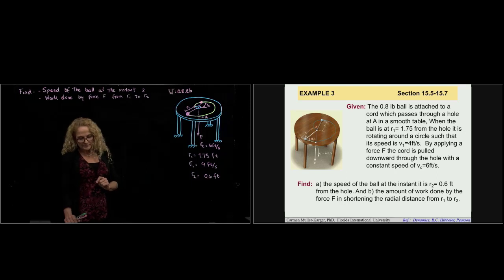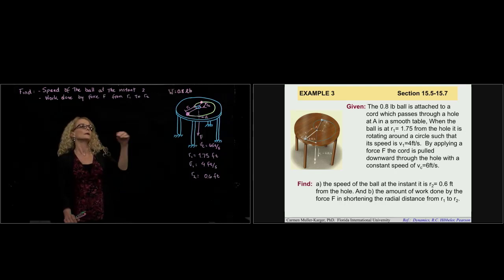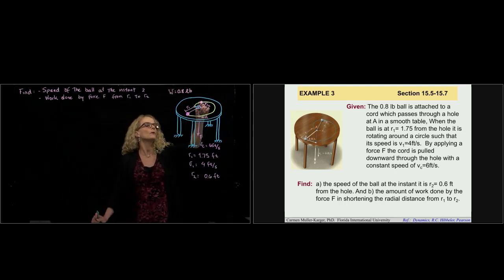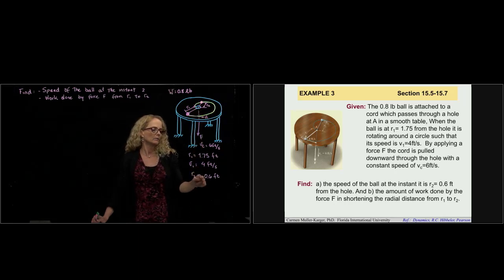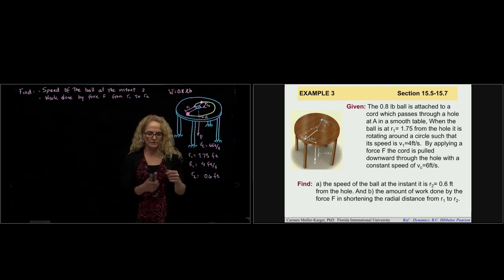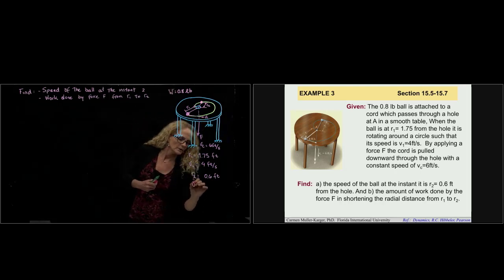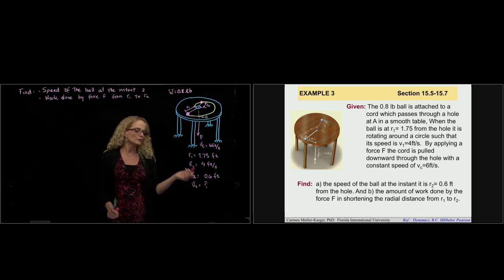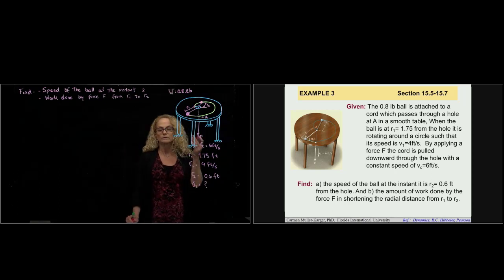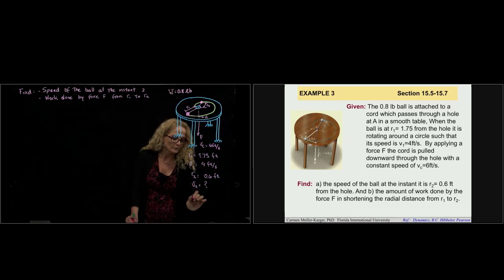We have been asked to find the speed of that ball when it reaches position 2, which is at R equals 0.6 feet. Velocity 2 is our unknown. We also want to find the work done by the force — remember that work can be named W or U.